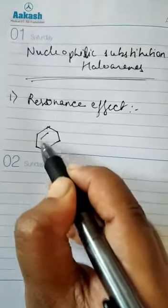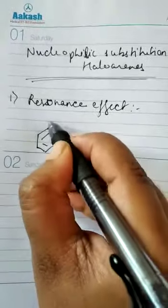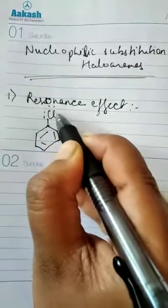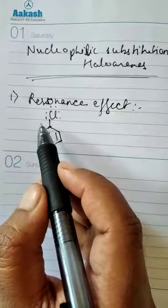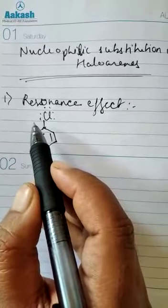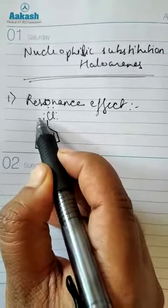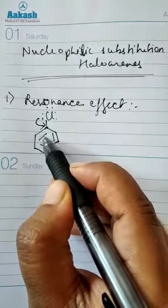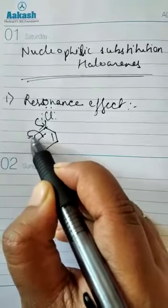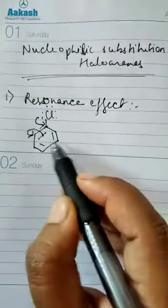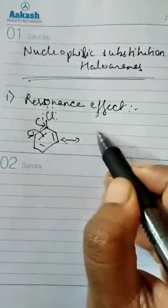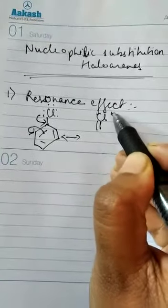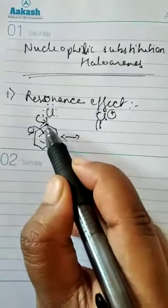The first reason is the resonance effect. Let's take the example of chlorobenzene. Chlorine is a ring-activating group, or you can say it is a lone pair donating group. So it donates its electrons towards the ring, one of the bonds is shifted, and its electrons come into the ring. It forms various resonating structures, and chlorine gets a positive charge because it has donated its electrons to the carbon atom.